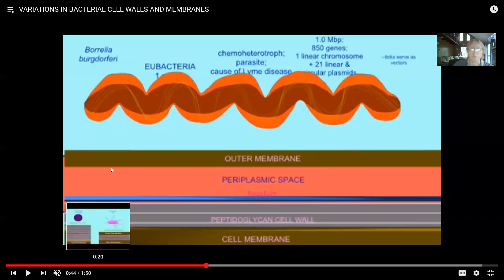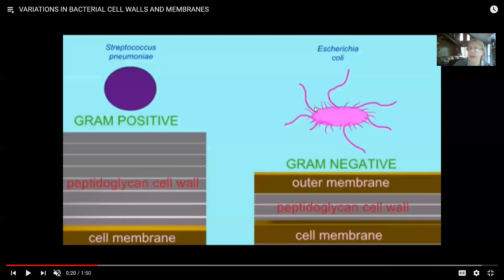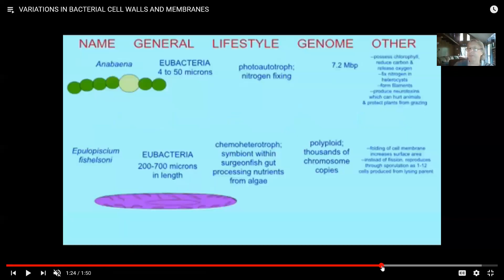You have a round form - that's a coccus; a rod-shaped form is a bacillus. There can be spirilla and spirochetes. And there are other shapes: some are rod-shaped and very long and thin, some are almost square, some are comma-shaped like Vibrio. Bacteria can vary a great deal.